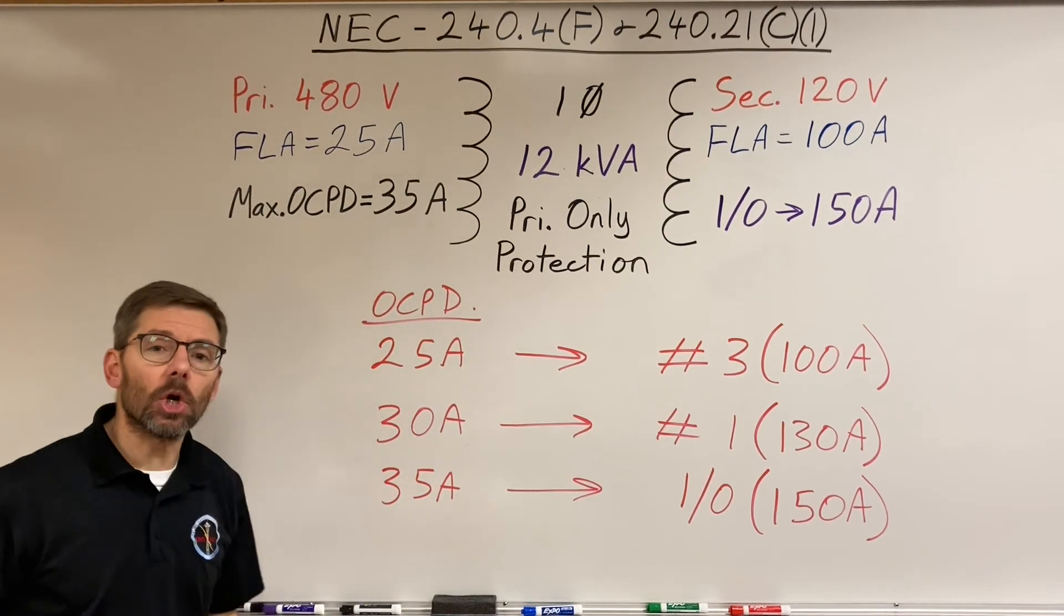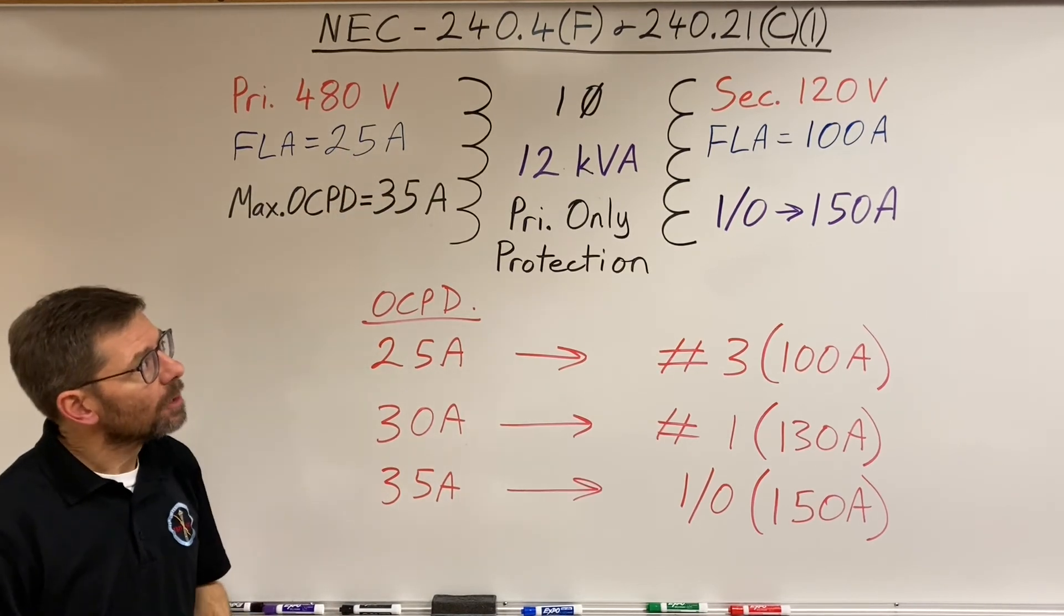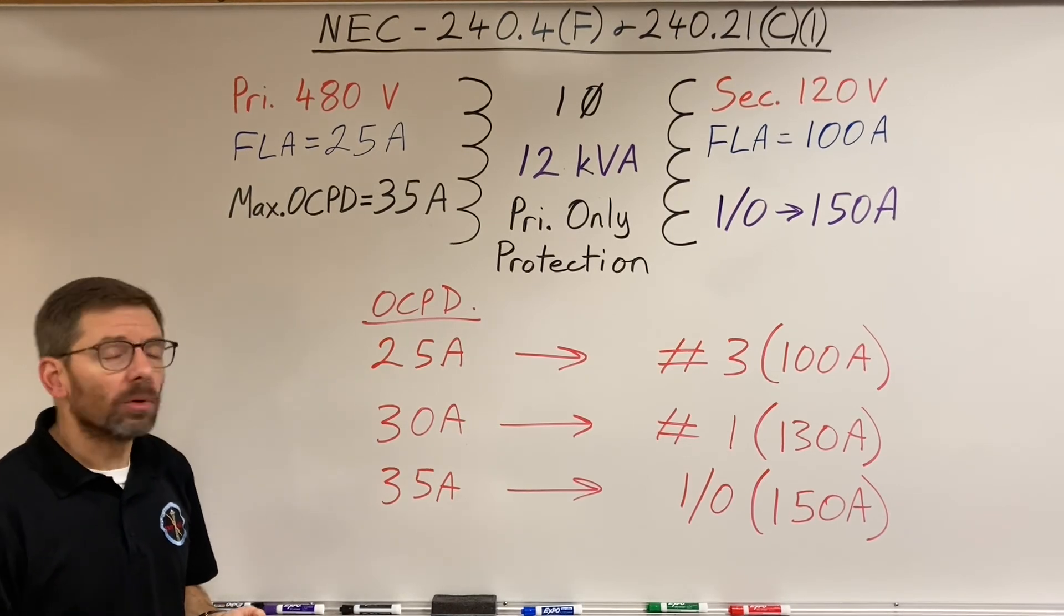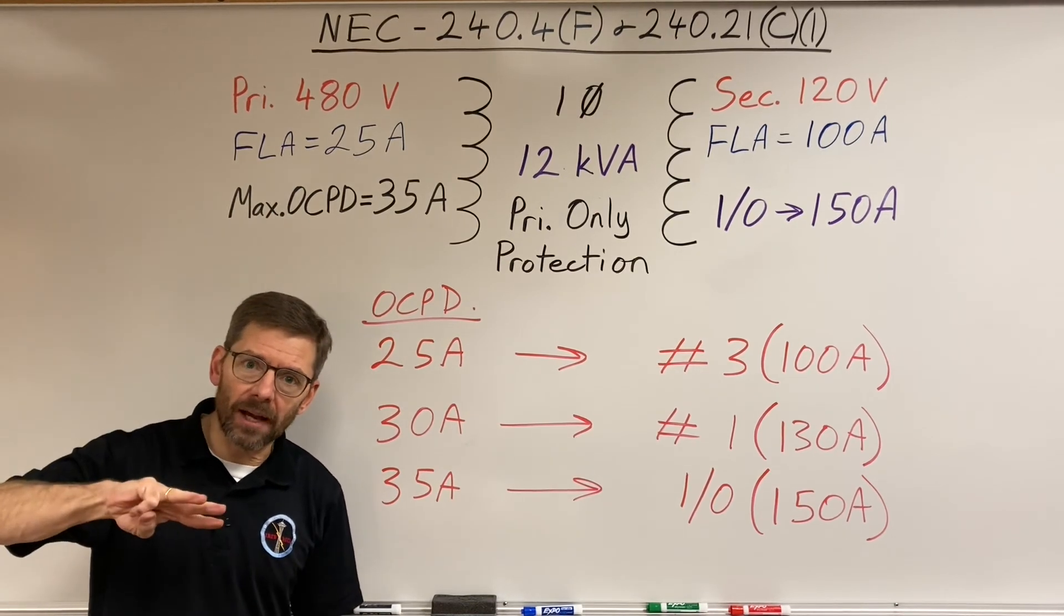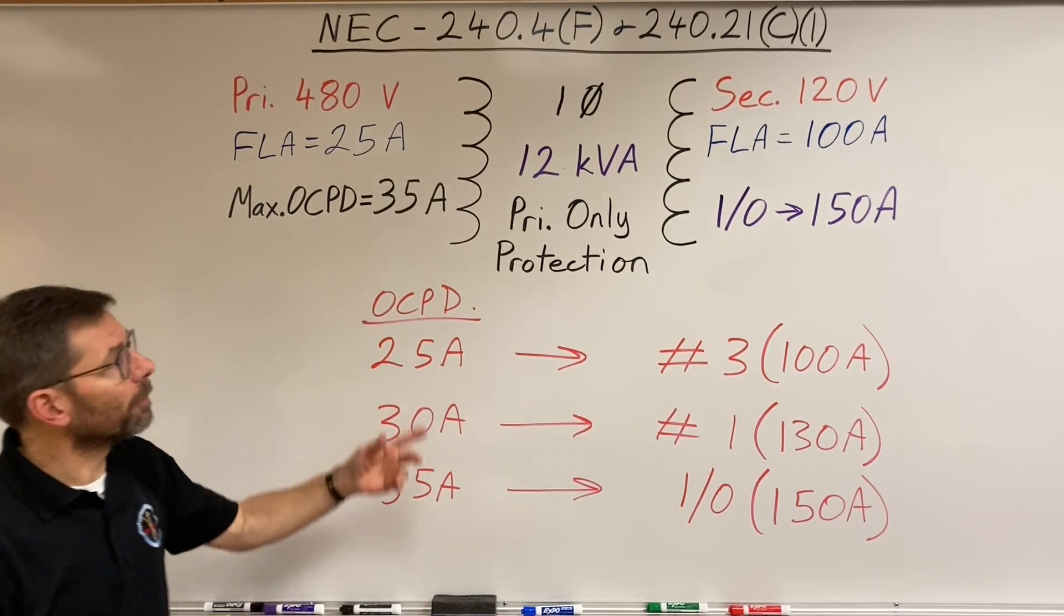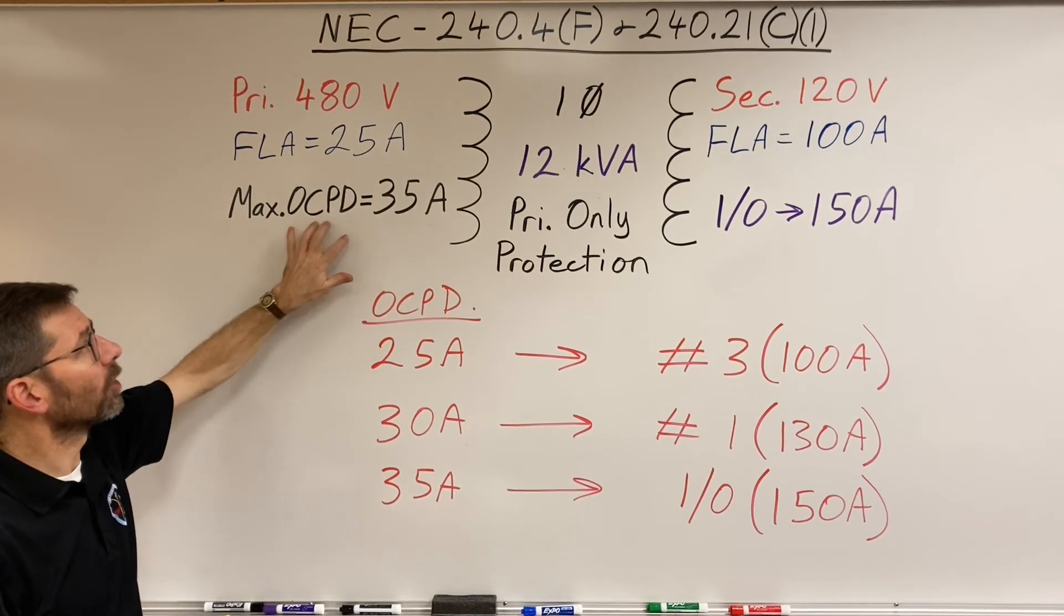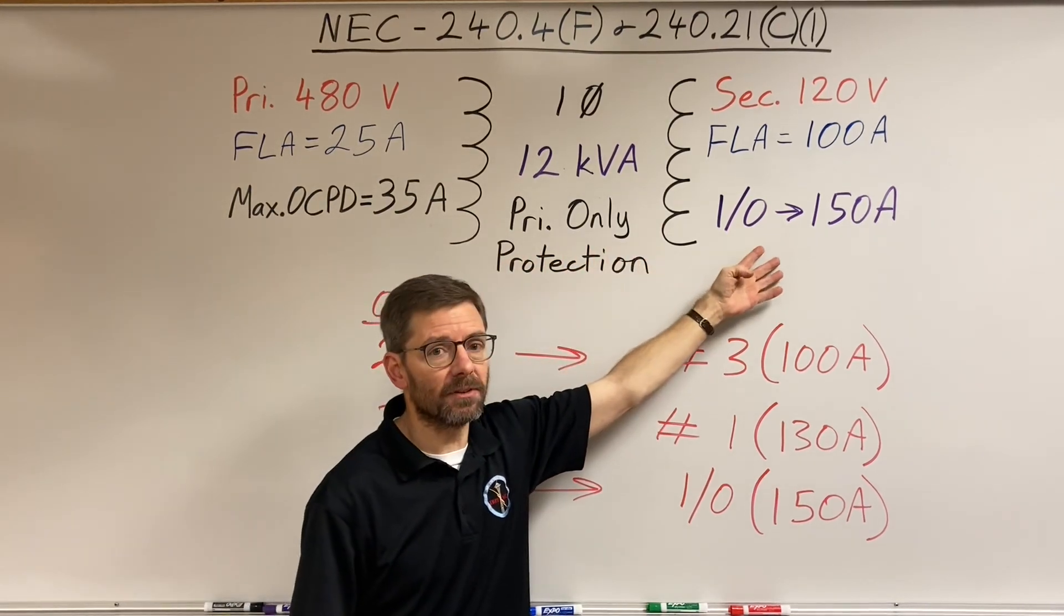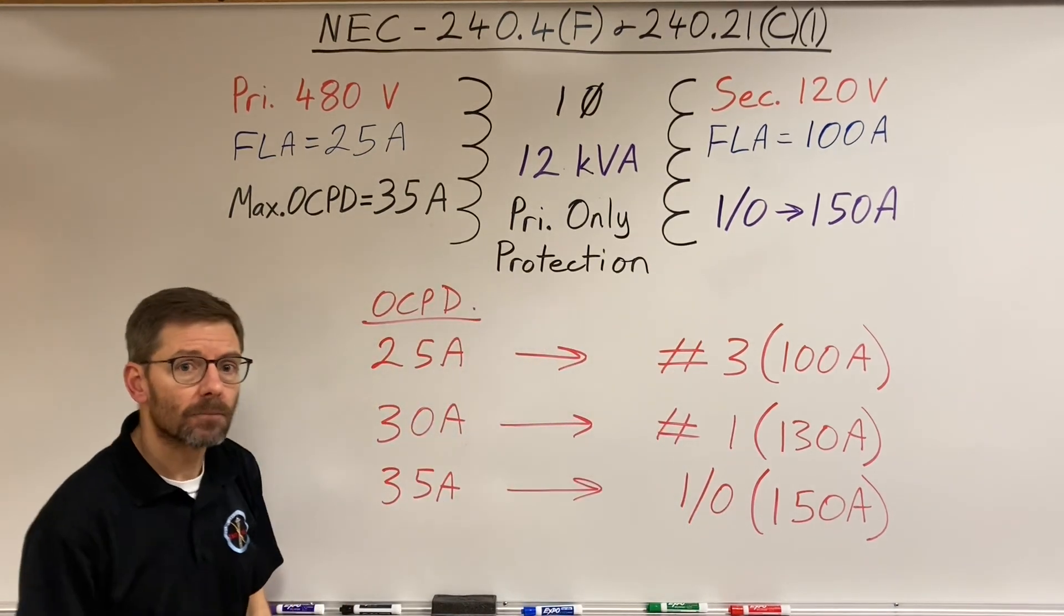So we can kind of play a negotiating game in this. That sums up what those two sections both say about transformer secondary conductors. Only those two circumstances, a two-wire single phase and a three-wire three-phase delta-delta, are when I can protect the secondary conductors with the primary overcurrent protective device. Now if we have a secondary overcurrent protective device, there's other rules in 240.21 that apply. But that's for another day.